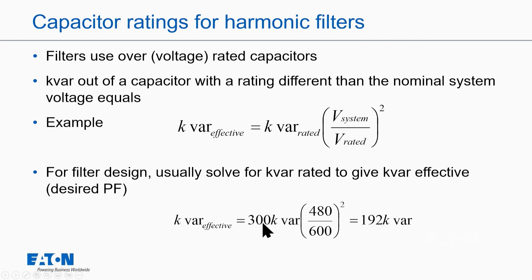So if I have, for example, a 300 kvar capacitor, I'm only going to get 192 kvar out of that capacitor if I apply at 480 if it's a 600 volt rated cap. So you could say, well, I'm just going to oversize the cap like I would a K rated transformer. But in this case, when I oversize it, what I'm actually doing is reducing the amount of kvar associated with it.